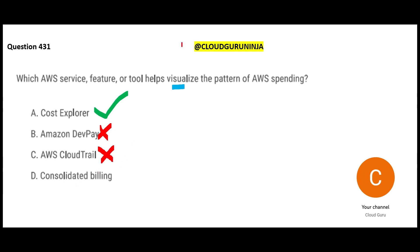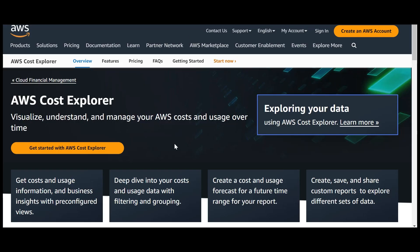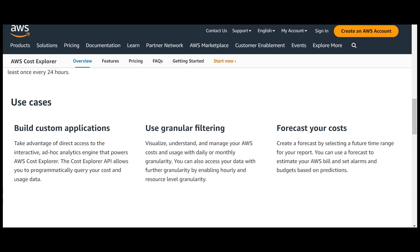Option D talks about Consolidated Billing, which helps when you have multiple AWS accounts - for example accounts for the finance, HR, IT, and marketing departments - and you want to consolidate the entire bill to get volume discount benefits. However, it will not give you a visualization of the pattern of AWS spending. Hence Cost Explorer is our answer for this question.